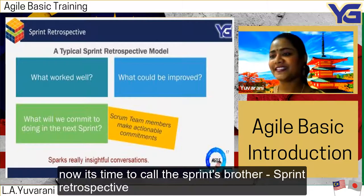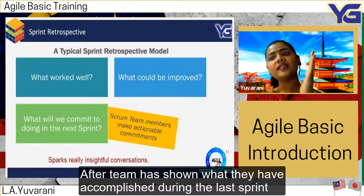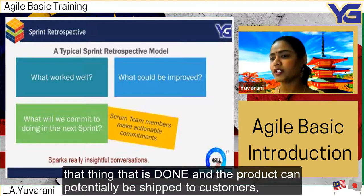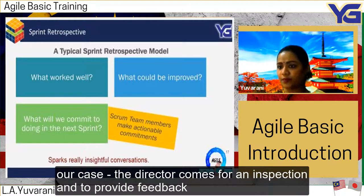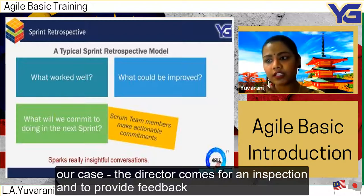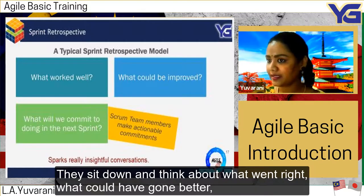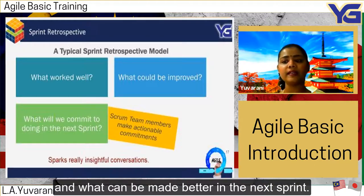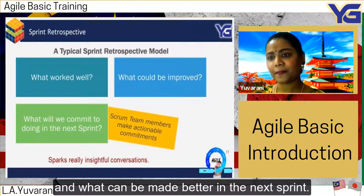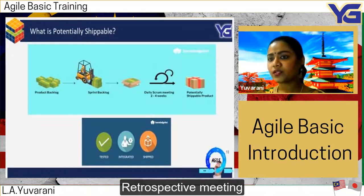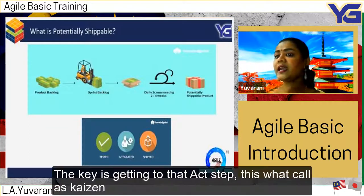Now let's talk about the sprint retrospective. After the team has shown what they accomplished during the last sprint — the things that are done and the product that can potentially be shipped to the customer or director — they sit down and think about what went right, what could have gone better, and what can be improved in the next sprint. This leads to the retrospective meeting, which drives continuous improvement — what we call kaizen — changing the process to make it better each time.